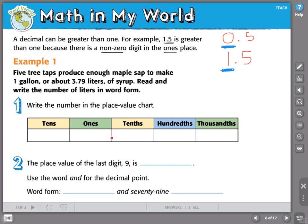Let's take that information and try our first example. Five tree taps produce enough maple sap to make one gallon or about 3.79 liters of syrup. Read and write the number of liters in word form.